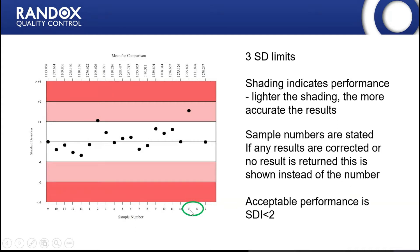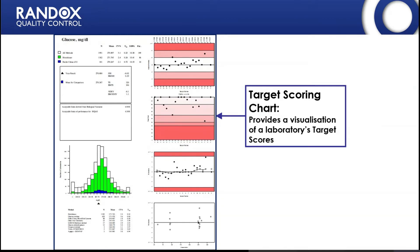There is also an 'R' which shows that results have been removed — this can be done if the sample was reconstituted incorrectly or if results for the wrong sample were entered. This means long-term performance and end-of-cycle reports are not affected by that pre-analytical mistake. You may see an 'R' along the bottom of the reports showing that results for that sample across all parameters have been removed.